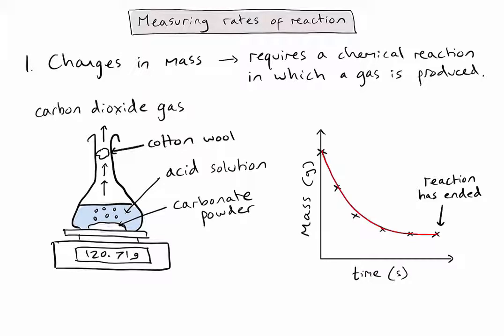And the reason we see it dropping most steeply at the beginning is because at the beginning of my reaction, I have the highest concentration of my reactants. In this case, the acid solution and carbonate powder, therefore, we're more likely to have collisions between them at that stage.